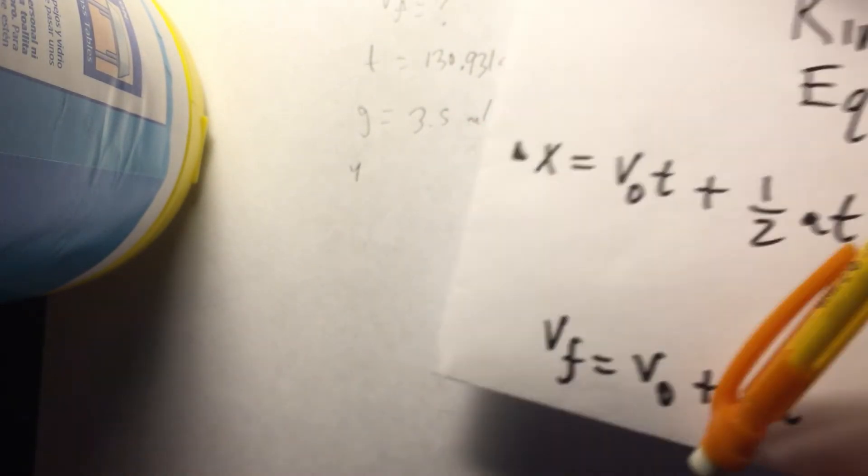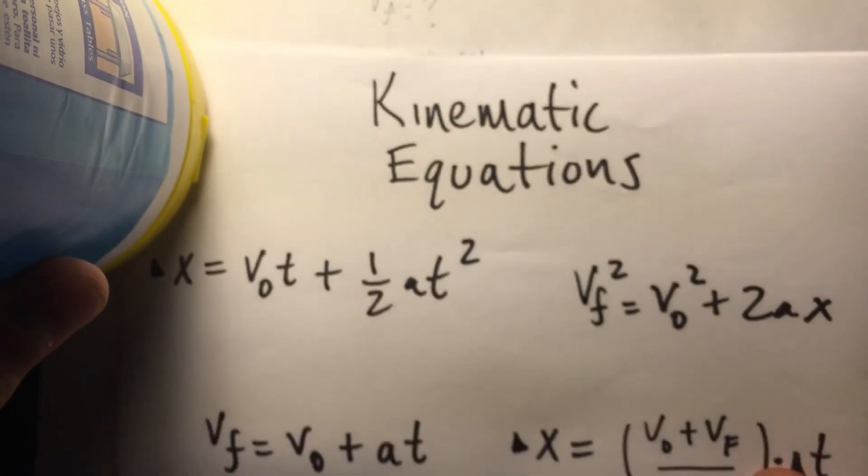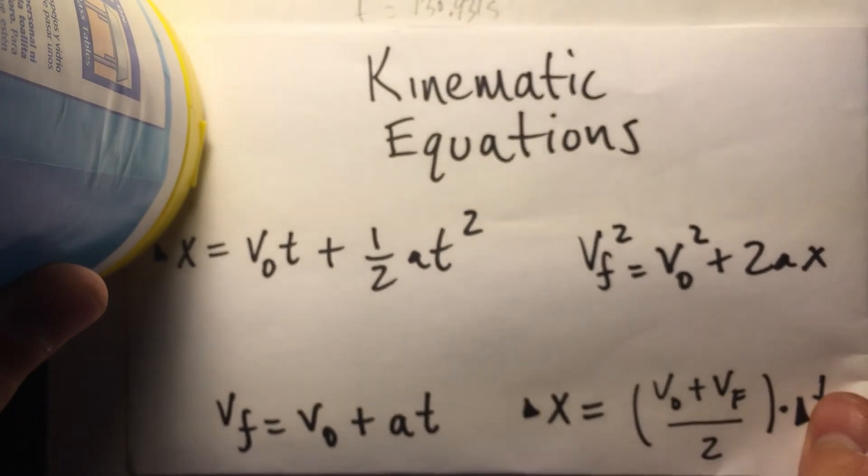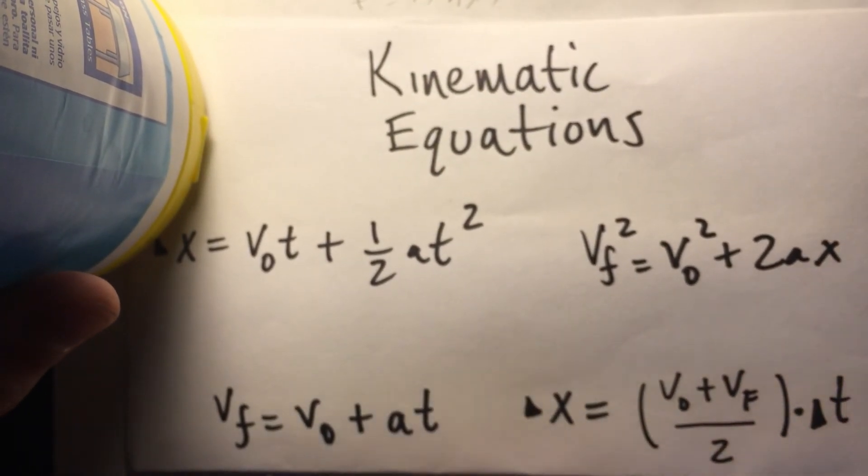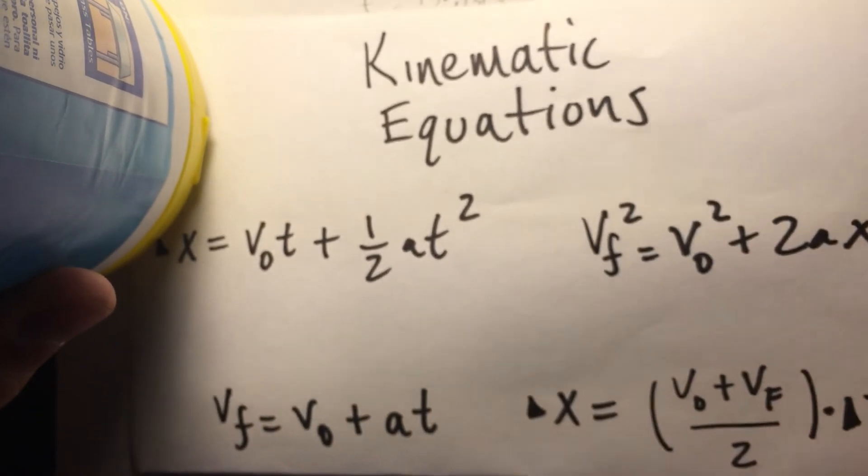again, in our kinematics equations, which one has all of the references, all of the variables we're looking for. We have final velocity. We have v-naught, which is zero. We have acceleration and we have time. So, it appears that this simple equation is the one that we're going to use.